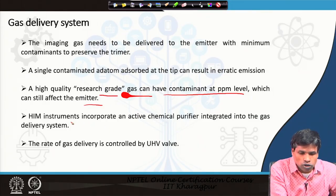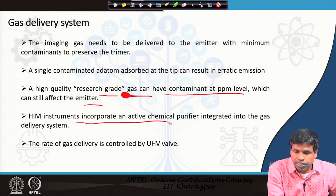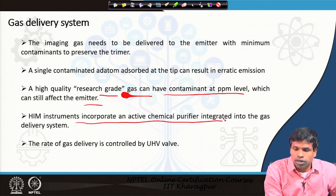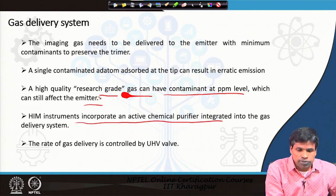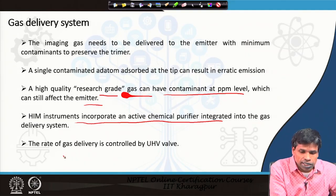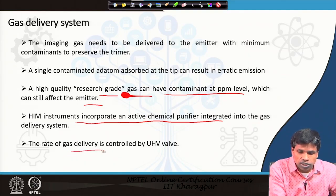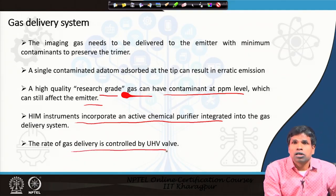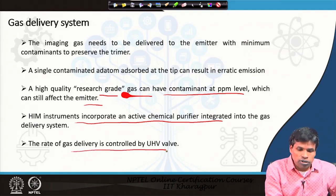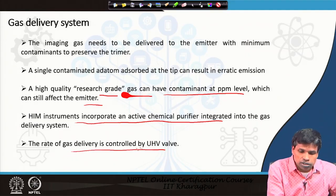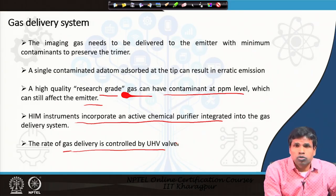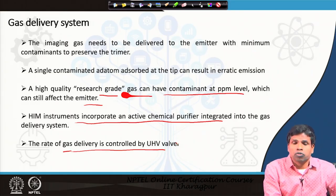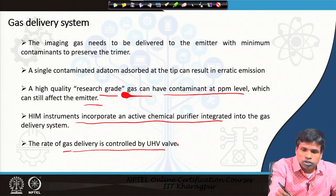Helium ion microscopy instruments incorporate an active chemical purifier for the research-grade gases, and gas delivery is controlled by a UHP chamber, because the pressure of the gases determines the beam current.